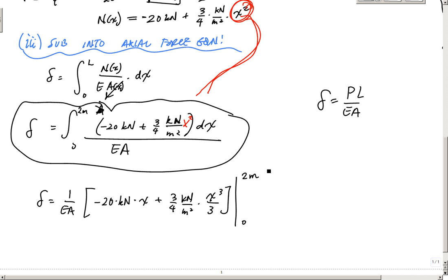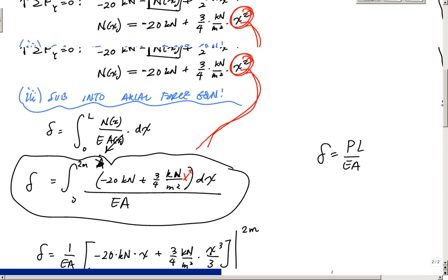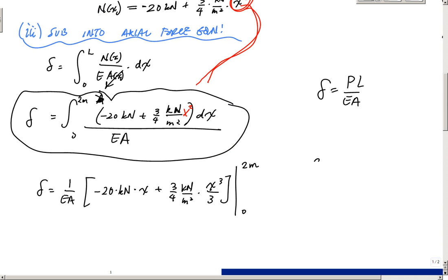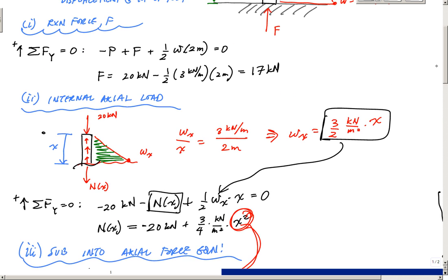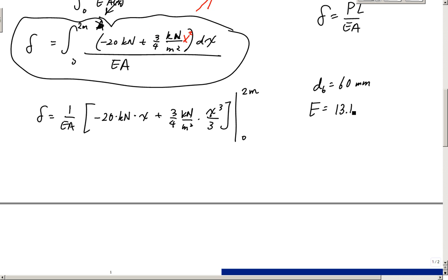And then you just plug and chug and get delta from there, and you're good to go. So the one thing you want to keep an eye out on is because the diameter is given to you in millimeters, 60 millimeters, and the modulus of elasticity is in... I think it was like 16,000 or 18,000 GPA. I don't know what... oh, 13.1 GPA.